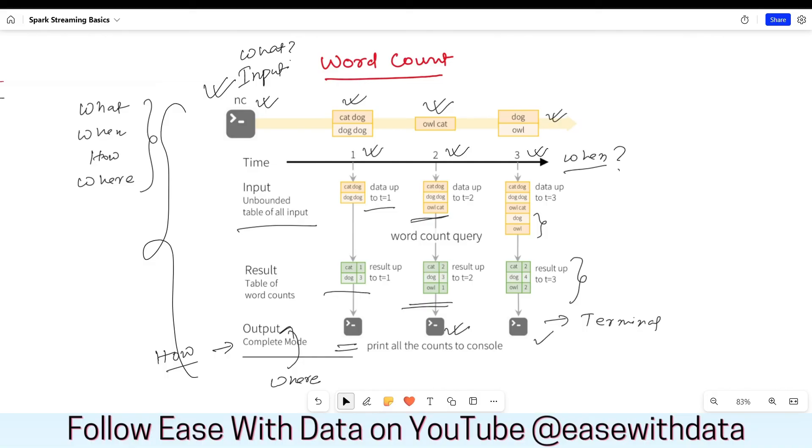So, now you understand the four concepts that we will discuss simultaneously in the upcoming sessions, which is what, when, how, and where. And these four are the basic concepts for any streaming job in Spark. Now, you can find this example in Spark documentation. It is well documented and available for everyone. If you are still unsure what we are doing right now, please wait till we start the coding session. This will all start making sense when we put down our code and start working with streaming data. Till then, keep learning, keep growing, keep sharing.